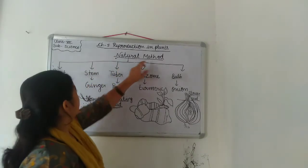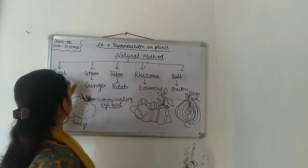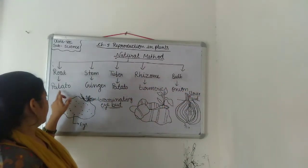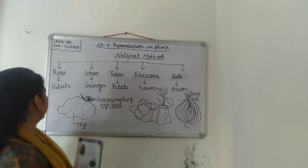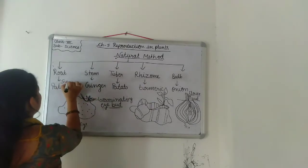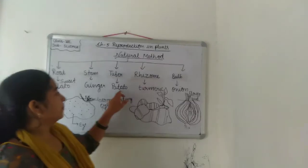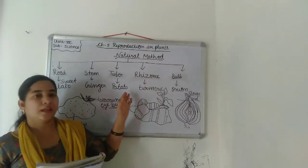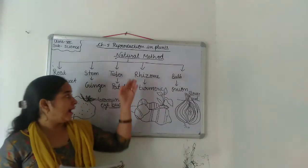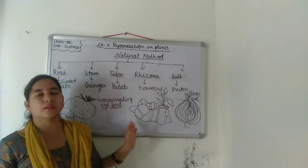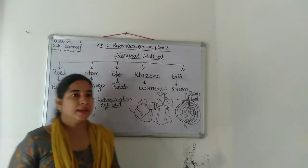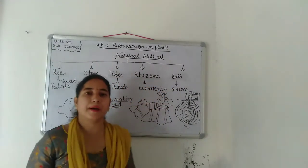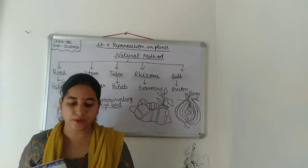So in today's lecture we learned about natural methods done by root, stem, tuber, rhizome, bulb, and corm. Examples include sweet potato and dahlia for roots; ginger, potato, turmeric, and onion for stems. All students should read this topic with the help of your book and draw a flow chart in your copy covering natural methods — root, stem, tuber, rhizome, and bulb. We will discuss the next topic in our next class. Thank you.